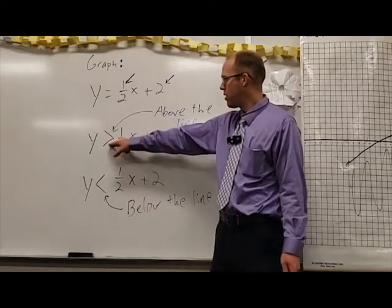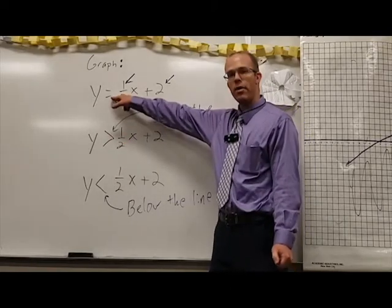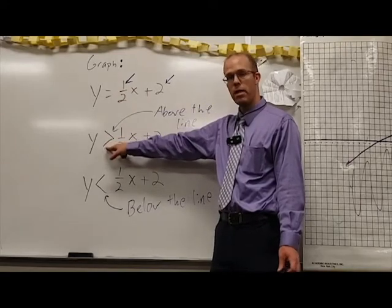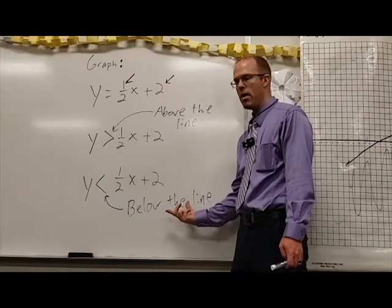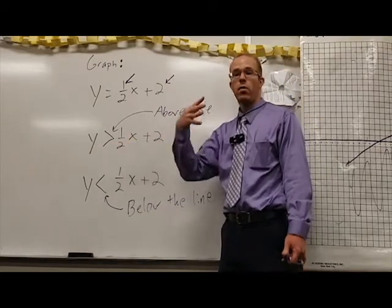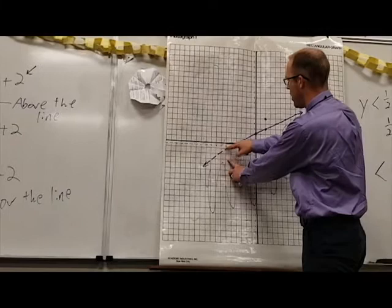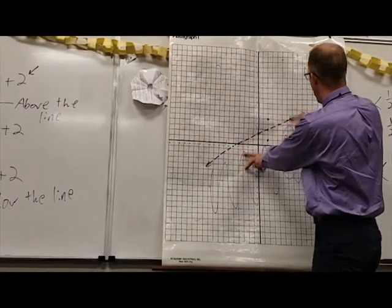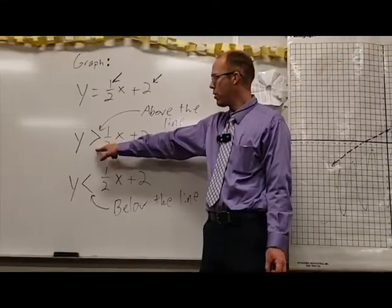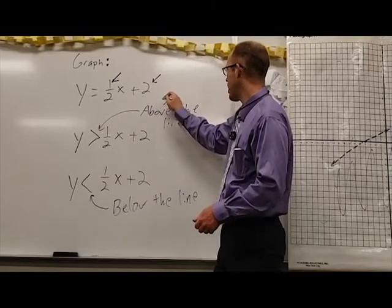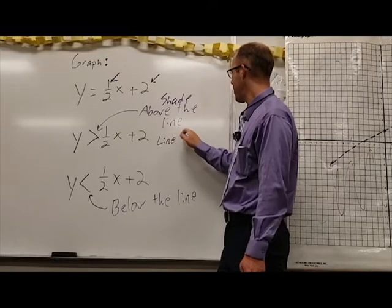When we have a greater than symbol, there's another detail: the line itself doesn't work, because the line comes from when they're equal, and we're not allowing it to be equal. I need to be able to see the line so I can tell what's above and below it, but I want to show the line itself doesn't work. We do that by changing our line from solid to dashed. I usually decide this before I draw the line — since we're not allowing it to be equal, I make a dashed line, shade above, and the line is dashed.